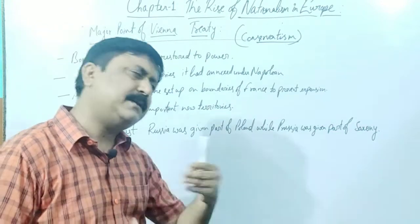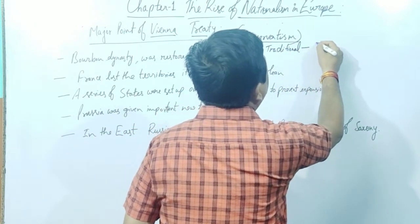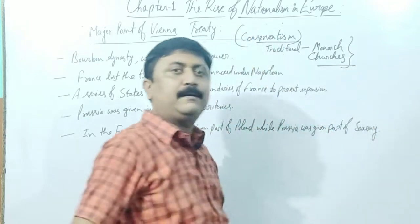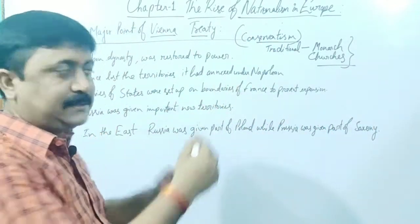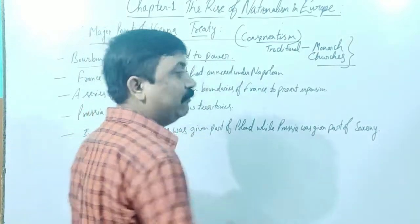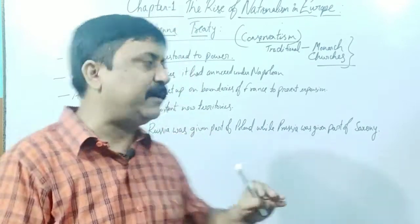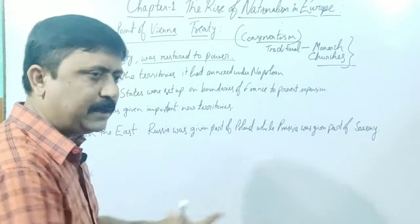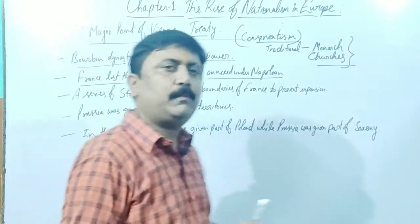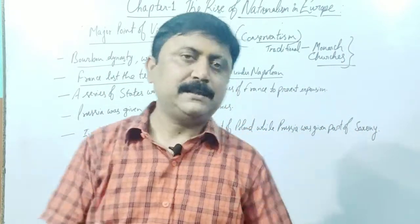These countries wanted the traditional structure to continue. The traditional structure meant: monarch — the king — and the church would remain dominant, these institutions would continue to function. The implementation of this thinking came in the Vienna Treaty. The Bourbon dynasty was restored to power — you will remember from the French Revolution that Louis XVI, who was killed, belonged to the Bourbon dynasty. His dynasty's people were restored to power by these countries so that monarchical rule and that dynasty would return. Secondly, France lost the territories it had annexed under Napoleon.